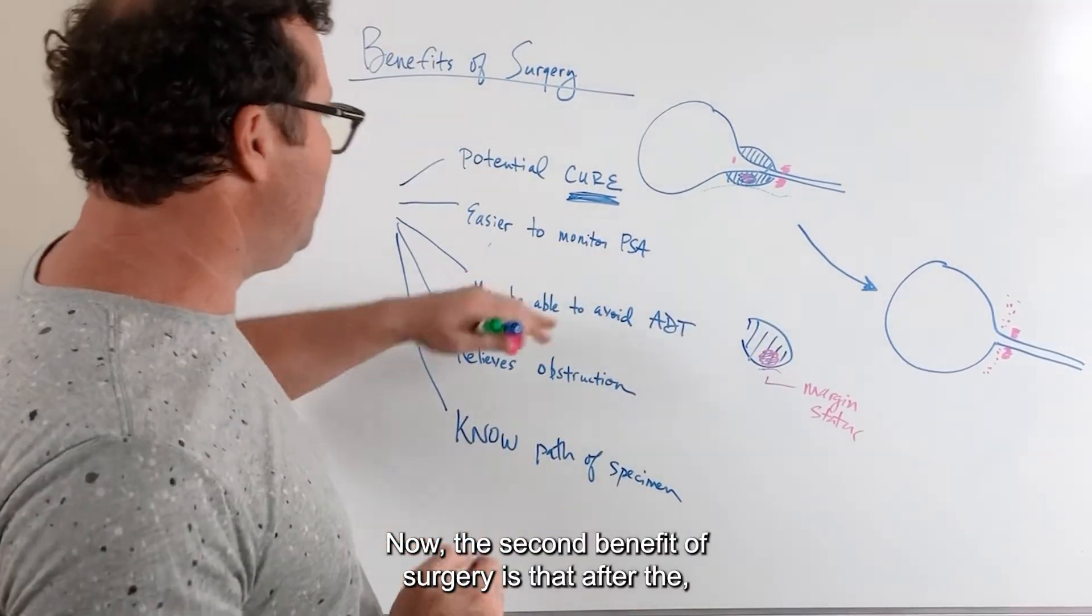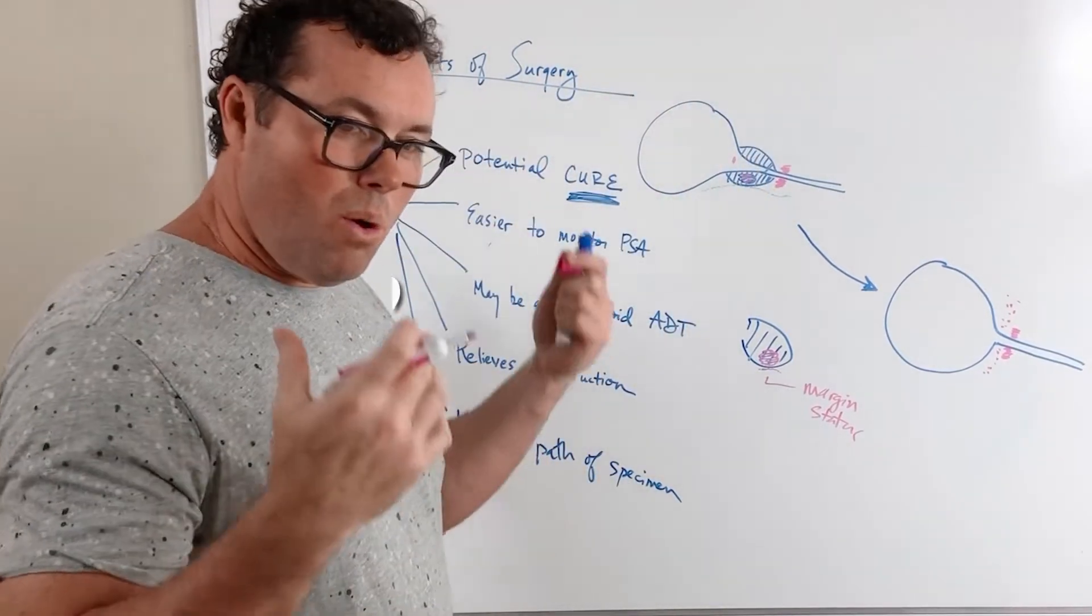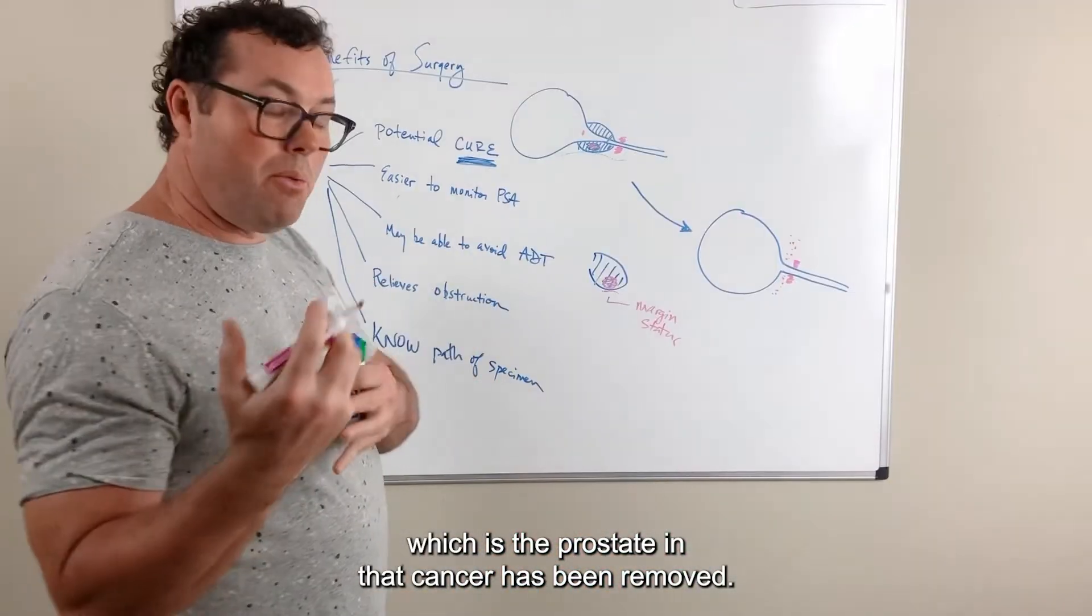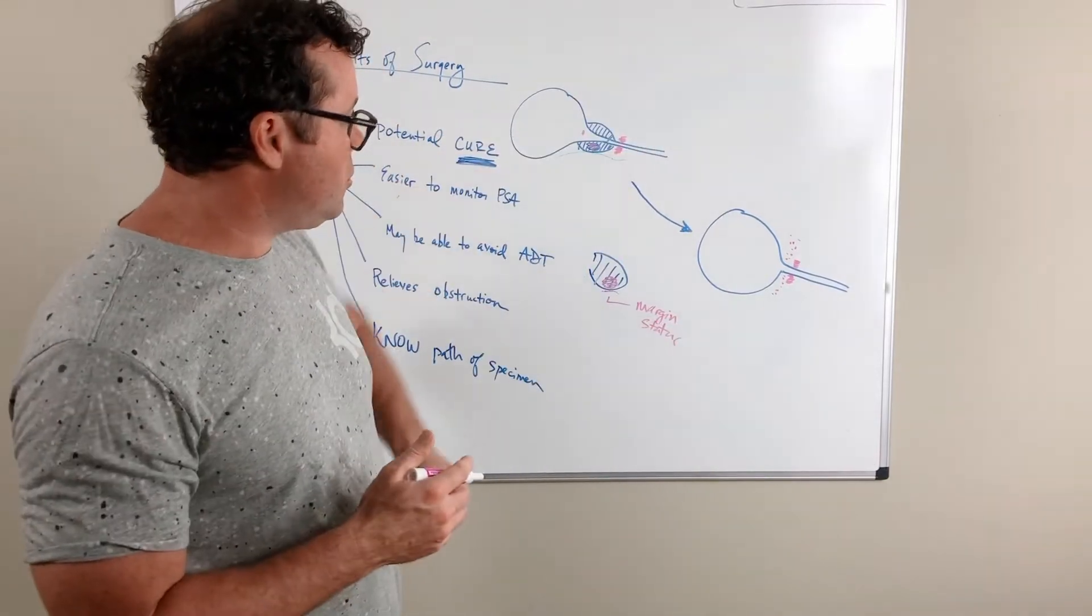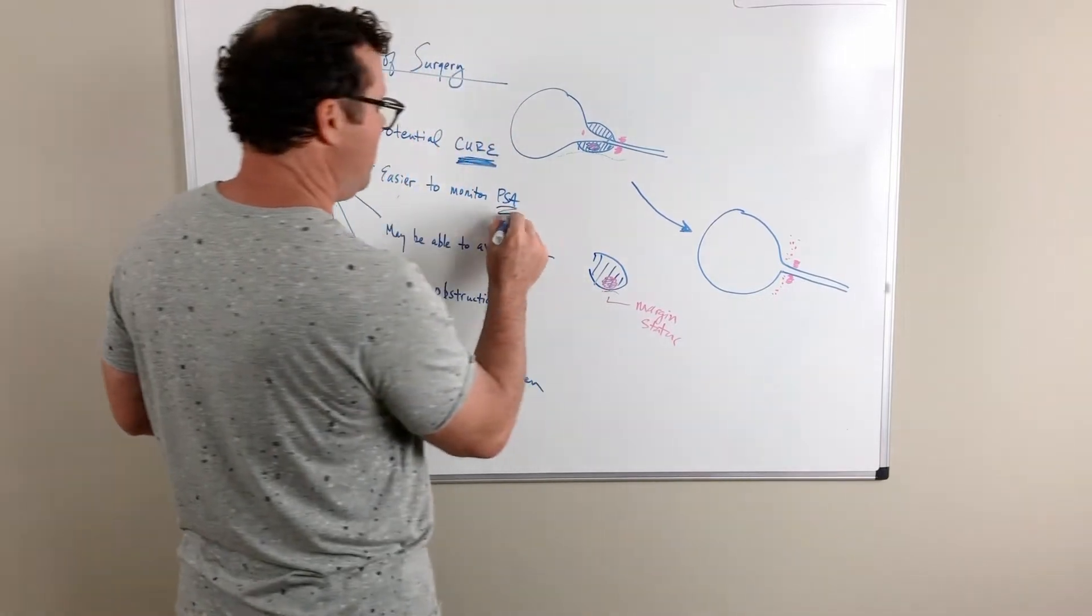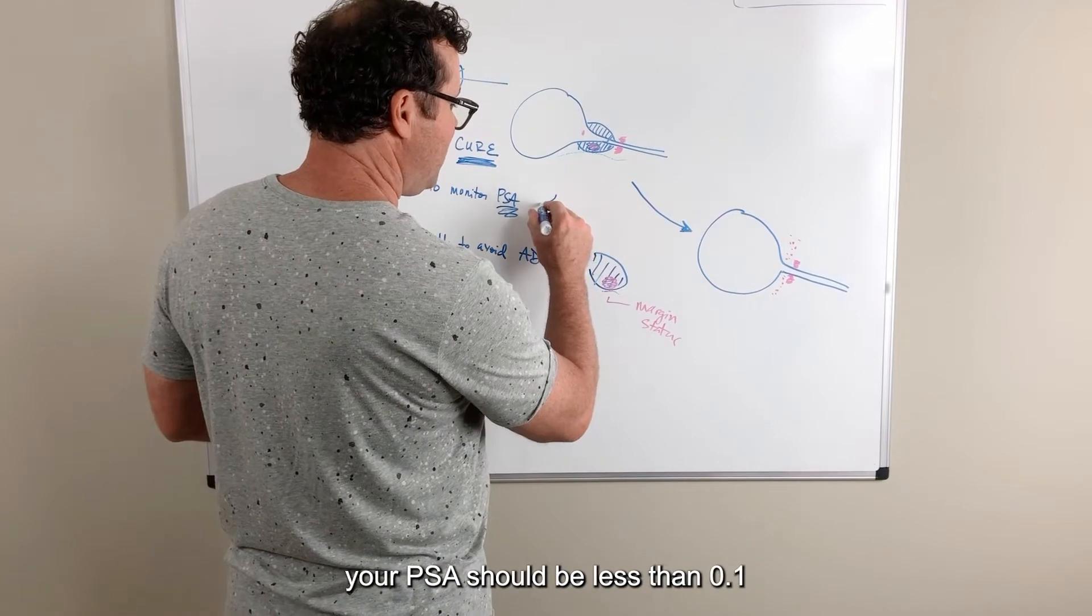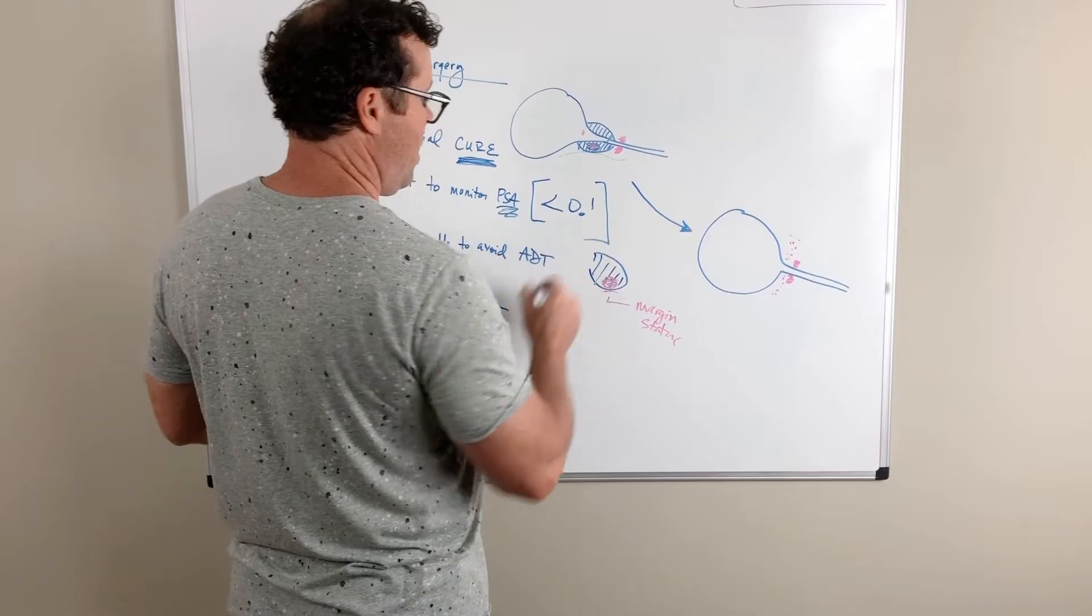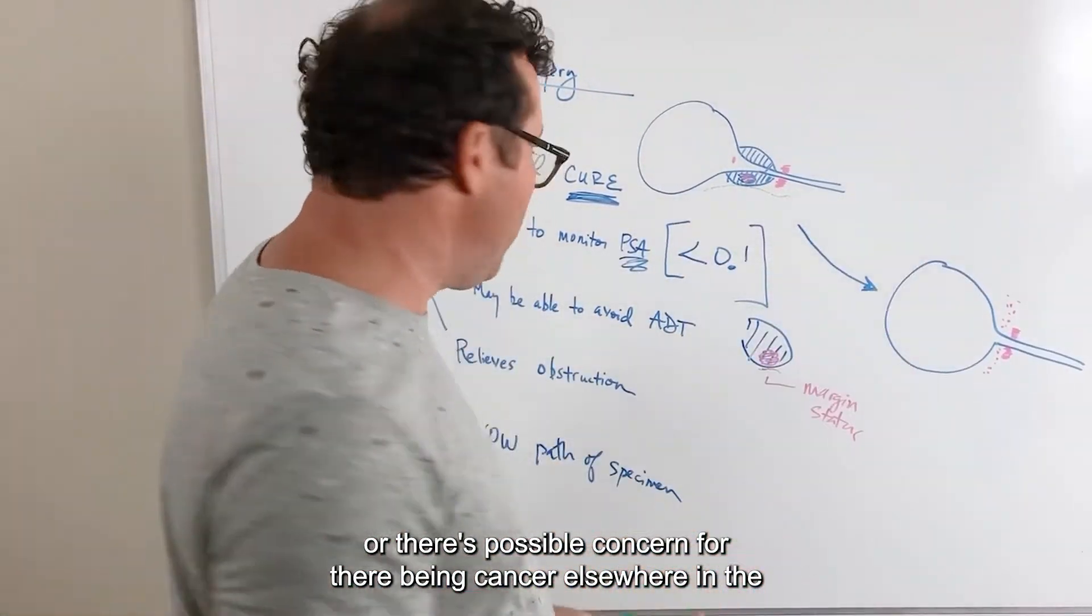Now, the second benefit of surgery is that after the prostate is removed, what produces PSA, which is the prostate, and that cancer has been removed. So there should be no production of PSA after surgery. And so it just makes it easier to monitor this blood test PSA. Because after surgery, your PSA should be less than 0.1, or there's possible concern for there being cancer elsewhere in the body.